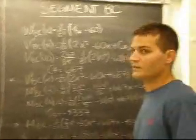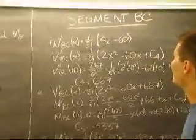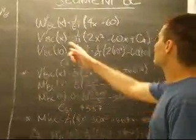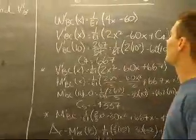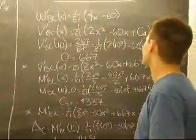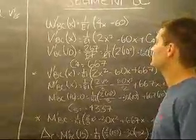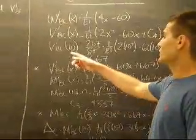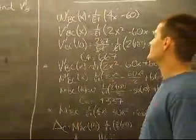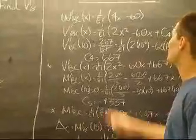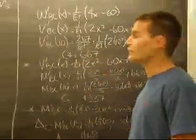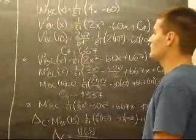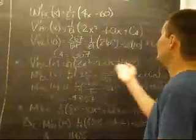Now to solve the second part, the deflection at C. We start with our loading equation of the conjugate beam from B to C. We integrate that which gives us 1 over EI times 2x squared minus 60x plus C4. To solve for C4 we use our known shear at x equals 10 which equals 267 over EI, putting that into the equation giving us C4 equals 667. Our final shear equation for BC is shown here.